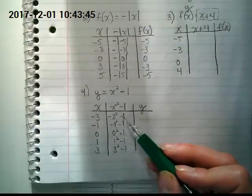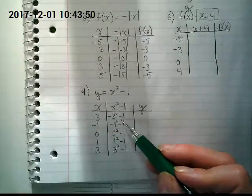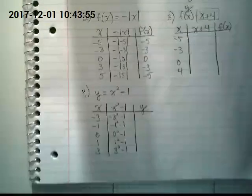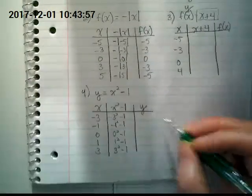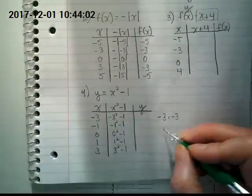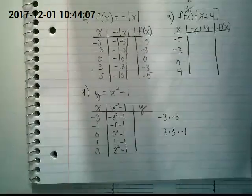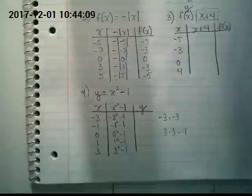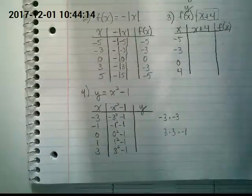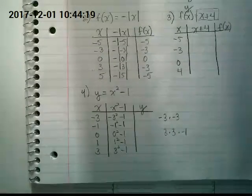Okay. So negative 3 times negative 3 would be 9. There's a thing here about the negative, though. Am I going to be doing negative 3 times negative 3? Or am I going to do 3 times 3 and then multiply them times negative 1? I want you guys to talk to each other about why you think it is what you think it is.